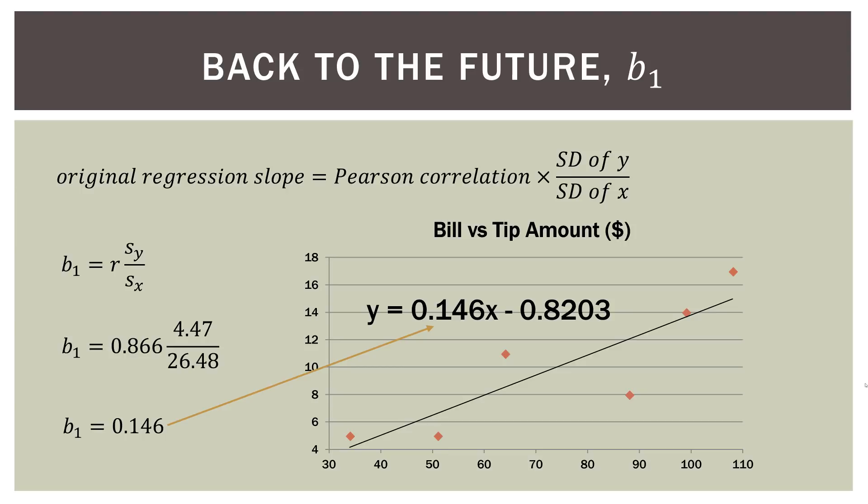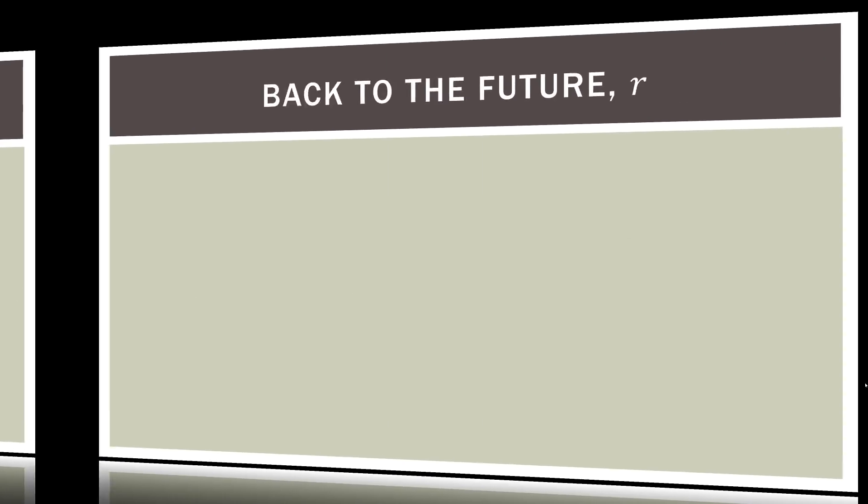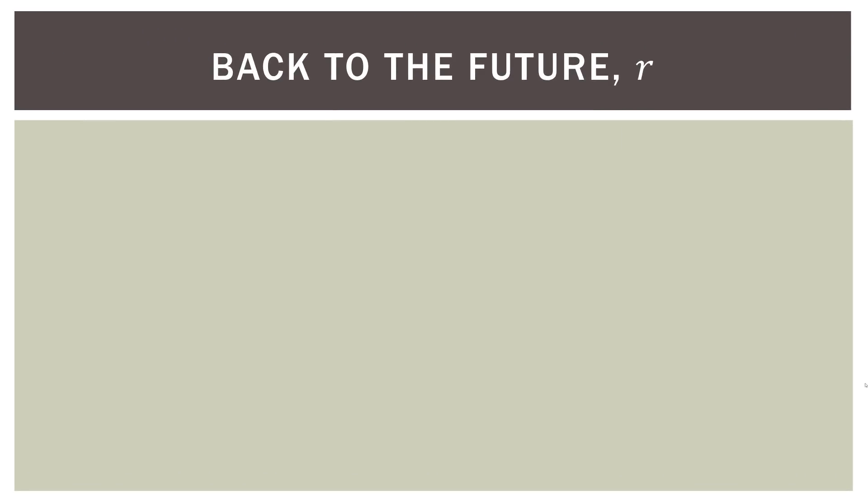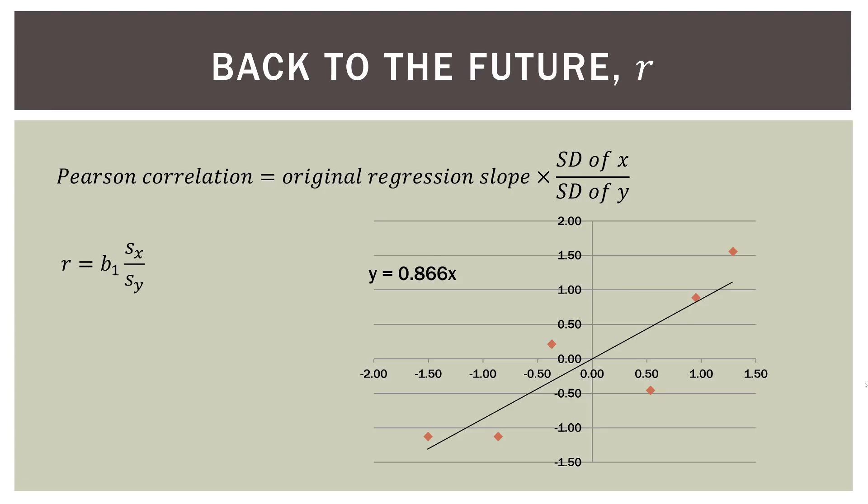So now we can talk about r, which is the correlation coefficient. With the algebra, we know that the correlation is equal to the original regression slope multiplied by the deviation of x divided by the deviation of y. And again, that's just an algebraic transformation. So here is our graph. Here is the equation. So r equals b sub one, which is the regression coefficient, times deviation of x over deviation of y. Go ahead and plug in those numbers, and lo and behold, we get 0.866.